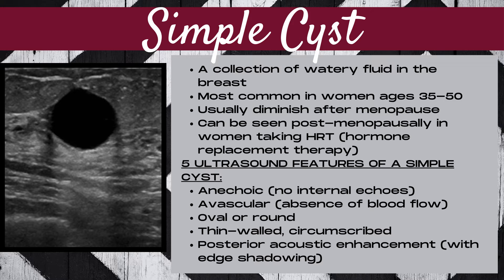Feature number three: oval or round shape. Feature number four: the walls should be thin and circumscribed. Feature number five: posterior acoustic enhancement. This means it looks like someone is shining a flashlight down through the mass, and the echoes posterior to the mass are brighter. Whenever you see posterior enhancement, you'll almost always see edge shadowing — these go hand in hand.